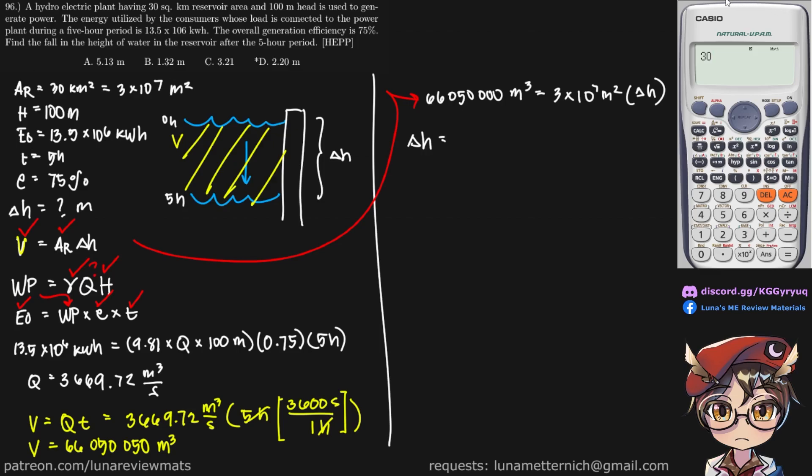So putting that in our calculator, let's see what happens. And there we go. Now we have a fall in the height of water of 2.2 meters exact.